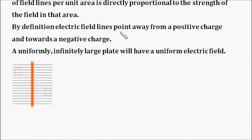By definition, electric field lines point away from a positive charge and towards a negative charge. I've already explained why that is, by placing a positive test charge to measure the strength of that field.